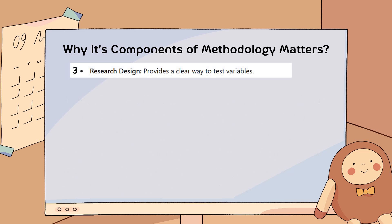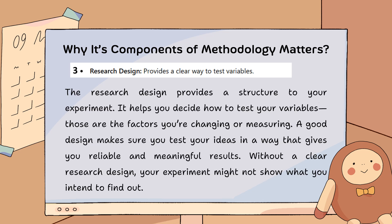Third, research design provides a clear way to test variables. It provides structure to your experiment and helps you decide how to test your variables — those are the factors you're changing or measuring. A good design makes sure you test your ideas in a way that gives reliable and meaningful results. Without a clear research design, your experiment might not show what you intend to find out.